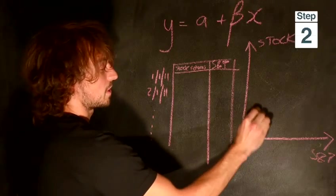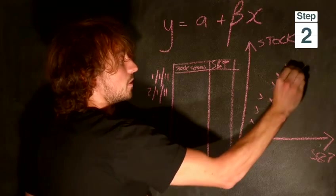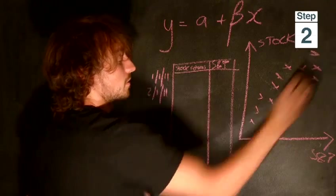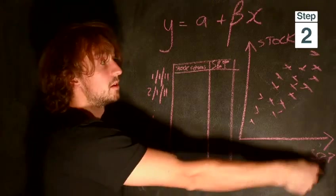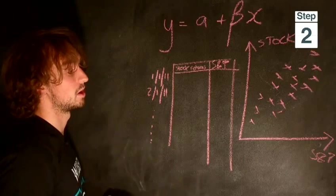And it would look something maybe like this. There's a positive correlation. So, when the S&P has a good day, your stock has a good day. When it has a bad day, your stock also has a bad day. So there's a positive correlation.